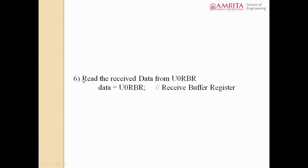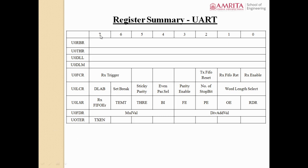In step 6, the data present in the U0RBR register — which holds the received data — is read into a variable called 'data'. Your final received data will then be available in that variable. This is how you perform serial reception using UART. A register summary is also shown, displaying all registers involved in both UART reception and transmission.